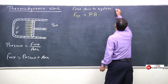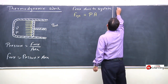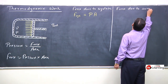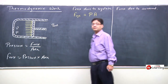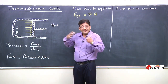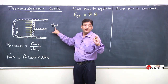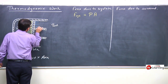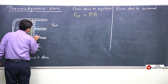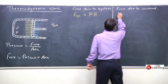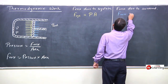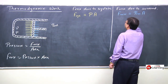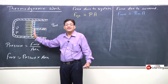One can also conceptualize force due to surrounding. The external surrounding is applying pressure P external. Due to this P external, force is exerted on the piston from outside. Force due to surrounding would be given by P external into area A, where A is the cross-sectional area of the piston.